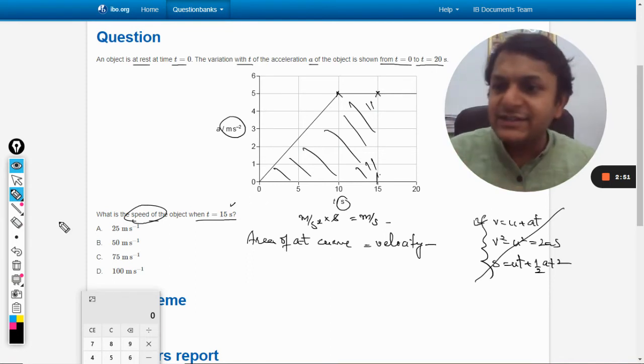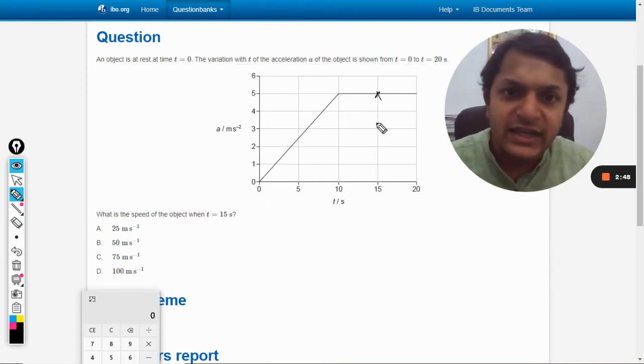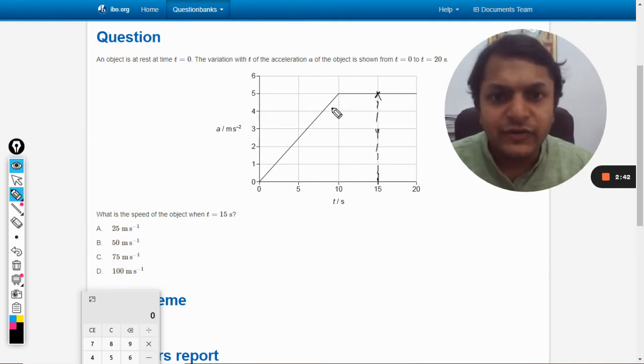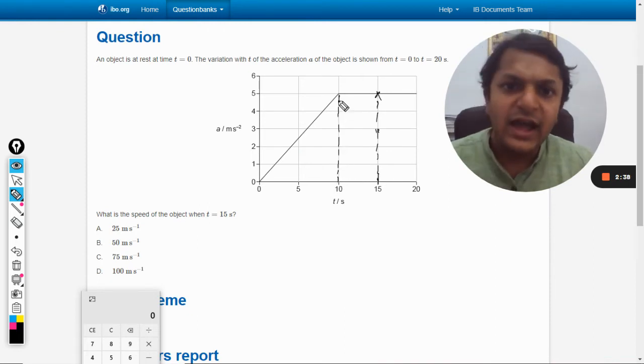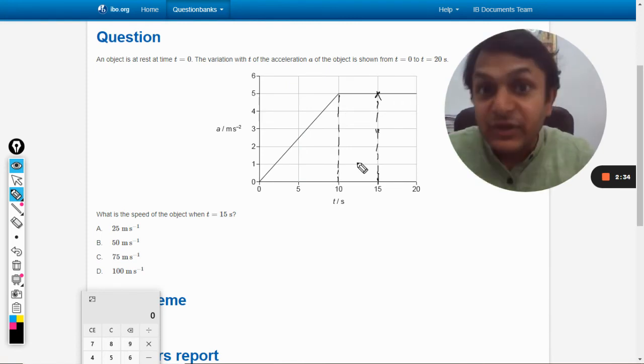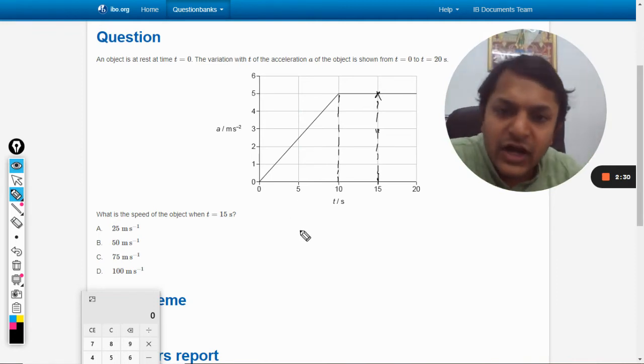Now, having said that, we will now find the area up to T is equal to 15. That is up to this. So we can say that it is the sum total of the area of this triangle and the area of this rectangle or you can use the formula for the trapezium also. Straightforward, we are just going to find the area under the curve.